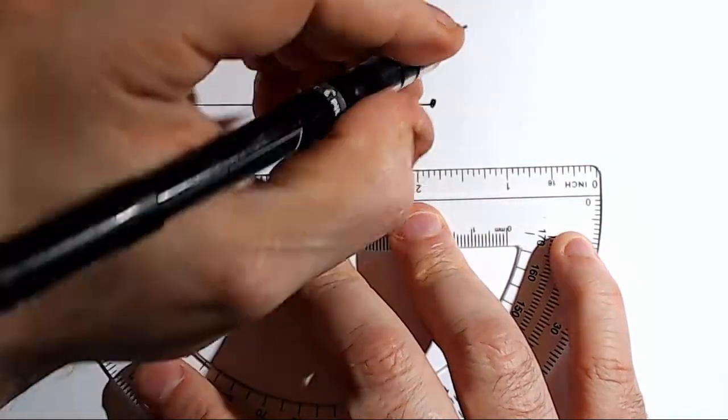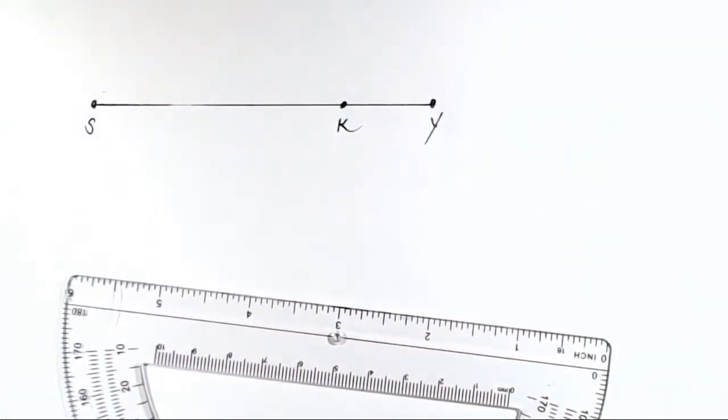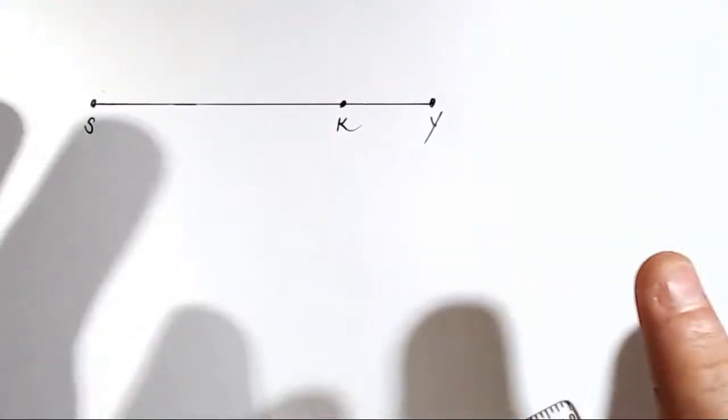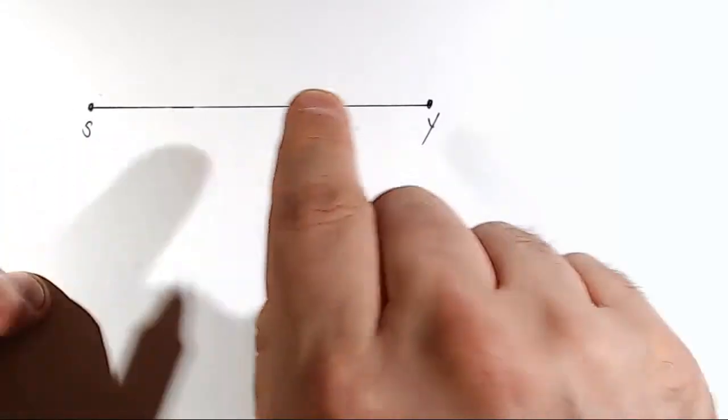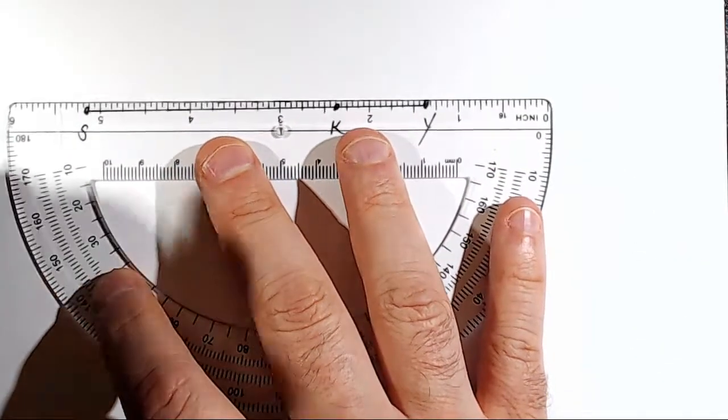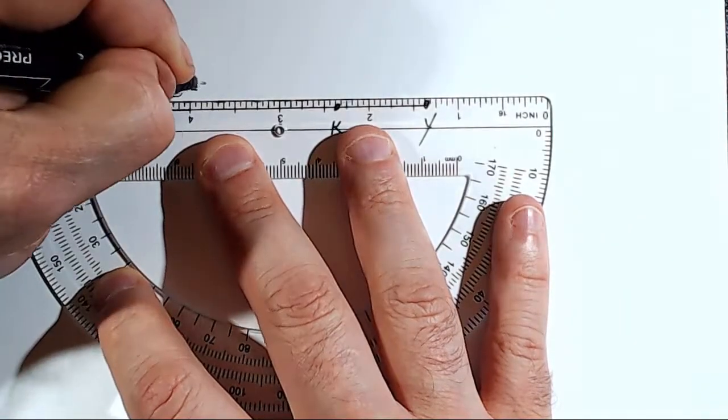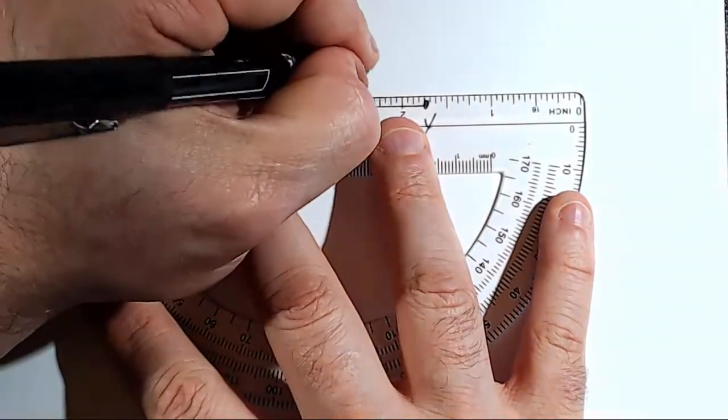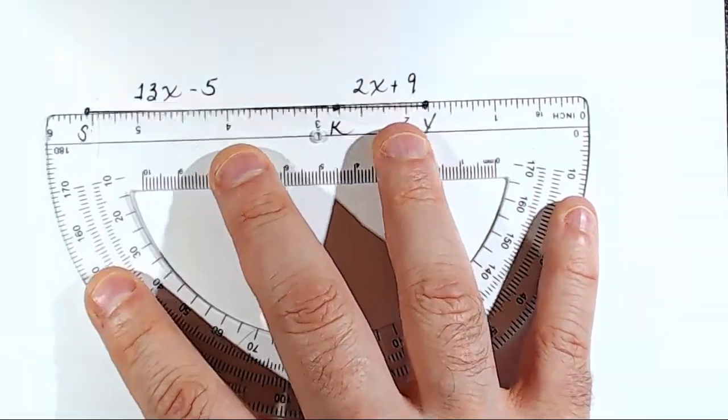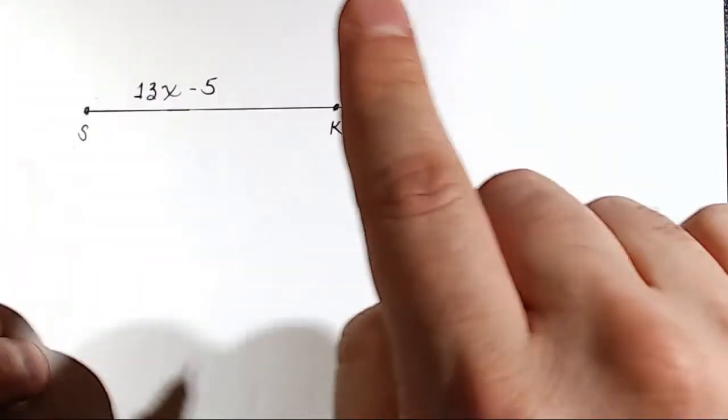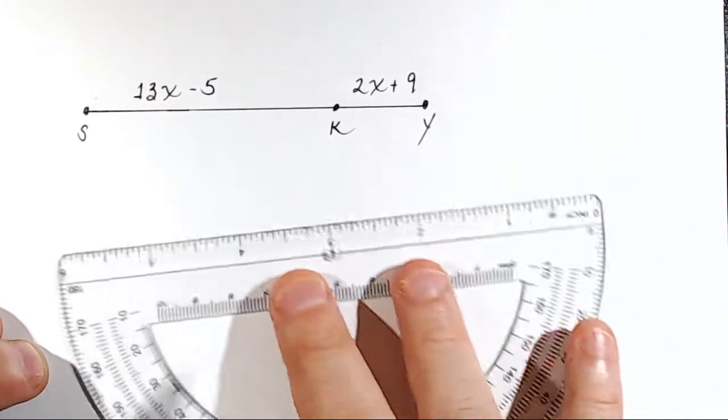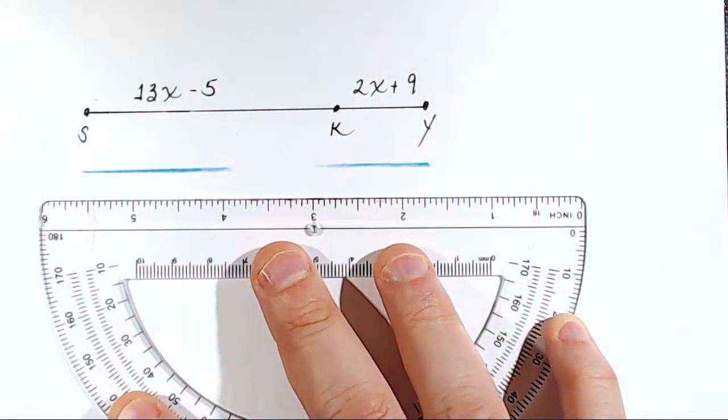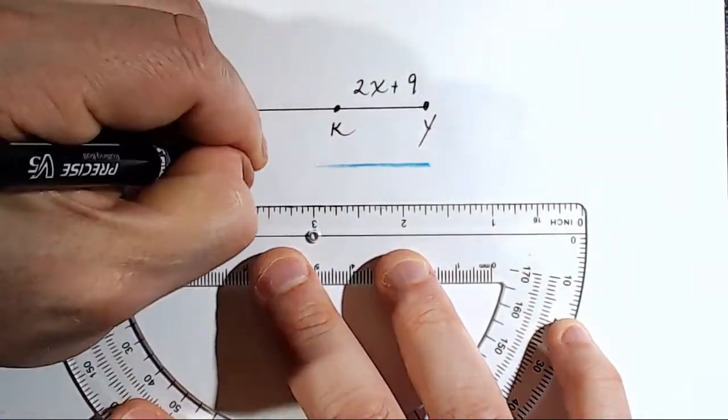So I'm going to label these points S, K, and Y. And we are actually given some information about these distances. We're told that the distance from S to K is 13X minus 5. We are also told that the distance from K to Y is equal to 2X plus 9. And finally, we are told the whole distance from S all the way to Y is 36 minus X.